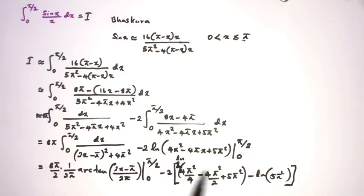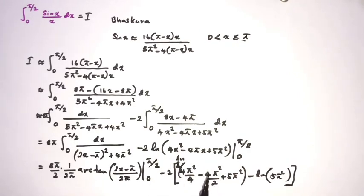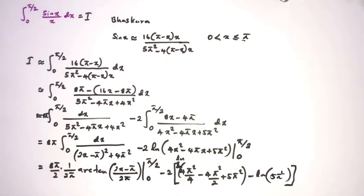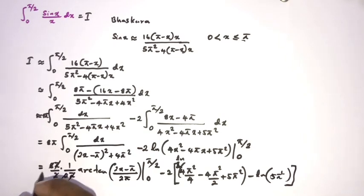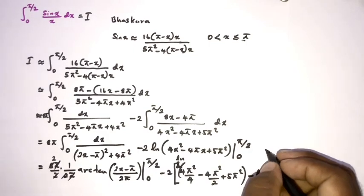I edited the video because I received an urgent call. Resuming: we have natural log of 5π², and the π terms cancel — two times two is four, and with the factor of eight we get two — so we can write the simplified expression.